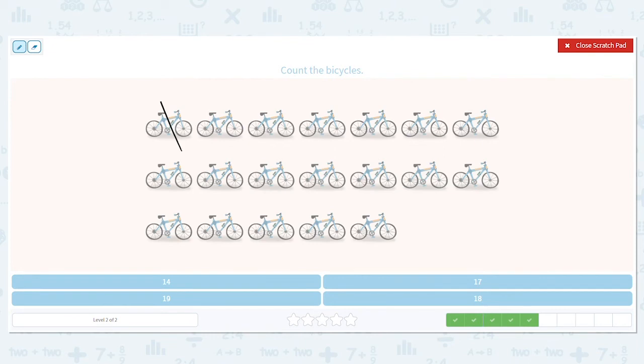1, 2, 3, 4, 5, 6, 7, 8, 9, 10, 11, 12, 13, 14, 15, 16, 17, 18, 19. That's a lot of bikes. 19 bikes.